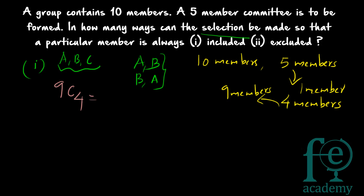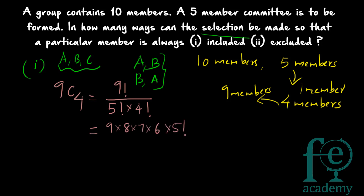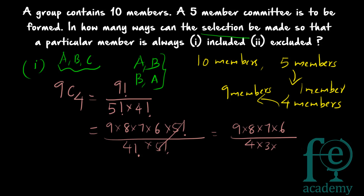So this can be done in 9C4 ways. The formula for NCR is N factorial divided by R factorial into (N minus R) factorial. For 9C4, this gives 9 factorial divided by 4 factorial into 5 factorial, which simplifies to 9 × 8 × 7 × 6 divided by 4 × 3 × 2 × 1 after the 5 factorials cancel.